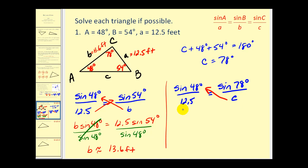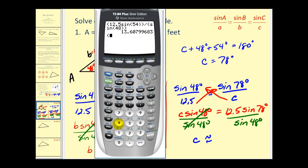We'll go ahead and cross multiply again. So we have C sine 48 degrees must equal 12.5 times the sine of 78 degrees. To solve for the length of C, we'll divide by sine 48 degrees. Now we'll go back to the calculator and find the value of this quotient. Twelve point five sine 78 degrees divided by the sine 48 degrees. And C is approximately 16.5 feet.